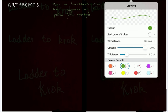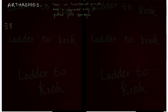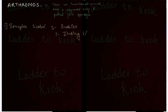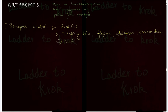The first arthropod we will be studying is Sarcoptes scabiei. It causes a very common skin disease called scabies. The symptoms you should remember are itching between the fingers, abdomen, and extremities — and this itching gets intense at night. So during the night, there is more itching. These are the symptoms for Sarcoptes scabiei which they will mention in the question.